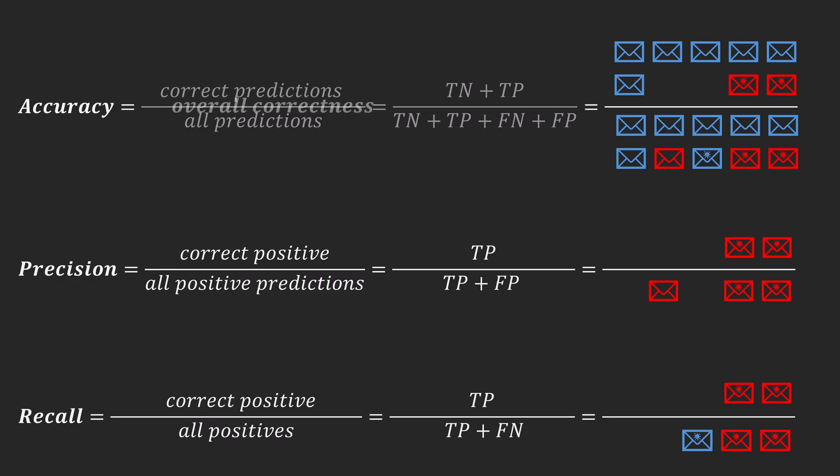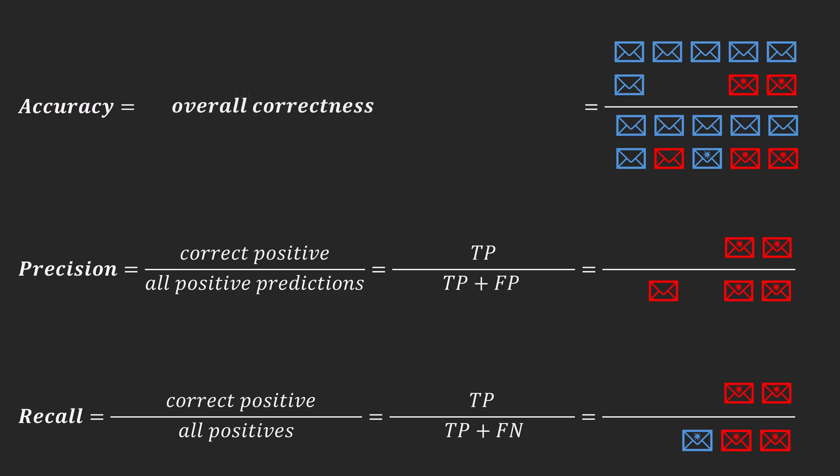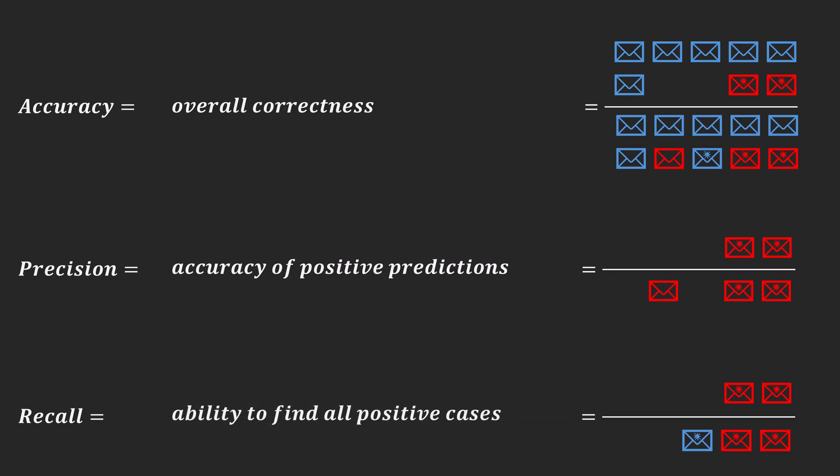In conclusion, accuracy can be helpful, but precision and recall are crucial for understanding model performance in practical scenarios, especially with imbalanced datasets where accuracy can be high due to predicting the majority class and totally missing the minority class.